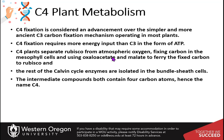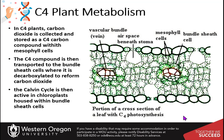Oxaloacetate and malate are familiar from the Krebs cycle — these four-carbon intermediates are also useful to shuttle fixed carbon. The rest of the Calvin cycle enzymes are isolated in what are called bundle sheath cells, and the intermediate compounds containing four carbon atoms — oxaloacetate and malate — are why it's named C4. Let's look at these spaces in a little more detail to see where this is happening.